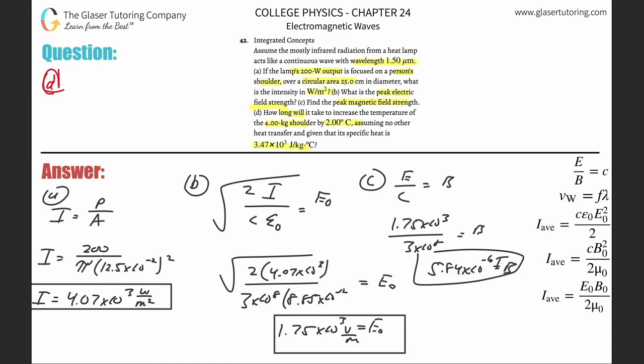How long will it take? The amount of energy is given by mc delta T. Let's find the amount of energy. The mass of the shoulder is 4 kilograms, specific heat is 3.47 times 10 to the third, and the change in temperature is 2 degrees Celsius. You don't need to convert to Kelvin because the difference in Celsius is the same as the difference in Kelvin.